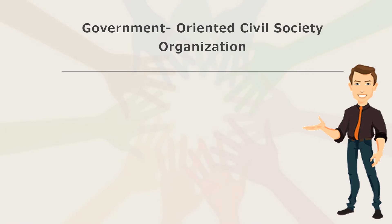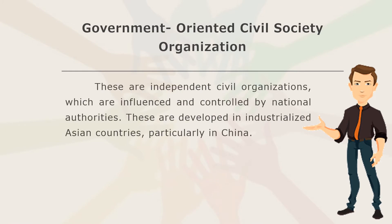Government-oriented civil society organizations are independent civil organizations which are influenced and controlled by national authorities. These are developed in industrialized Asian countries, particularly in China.